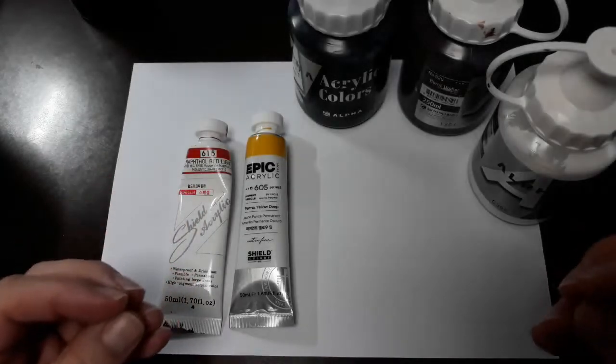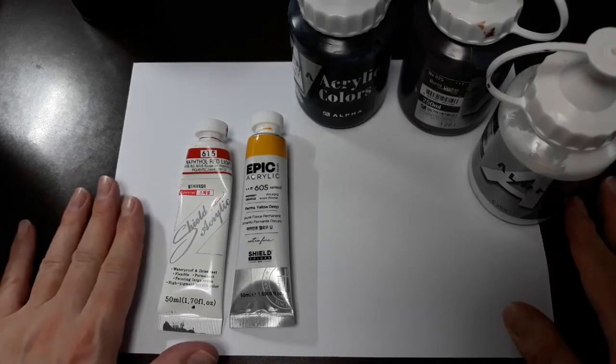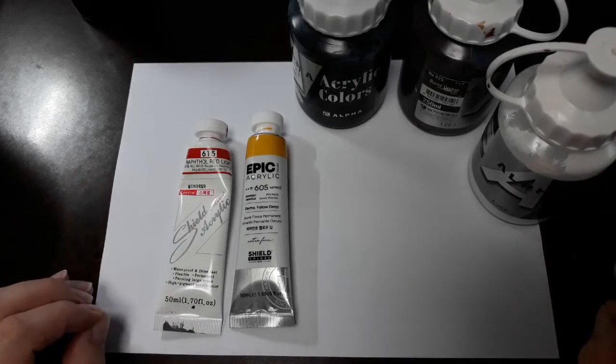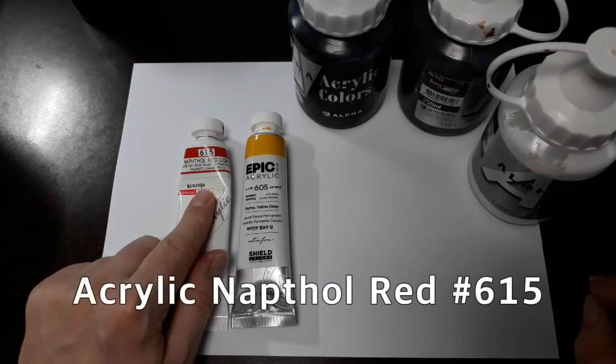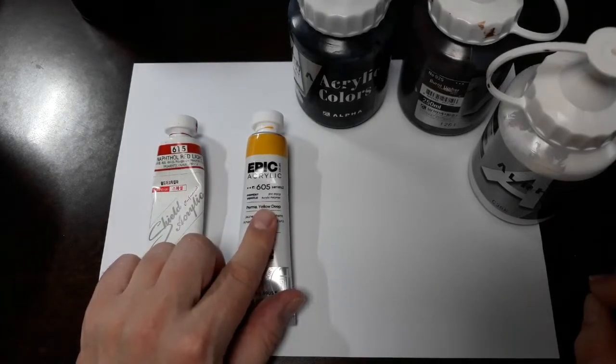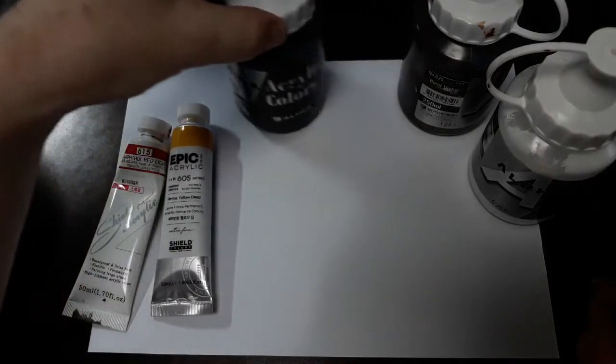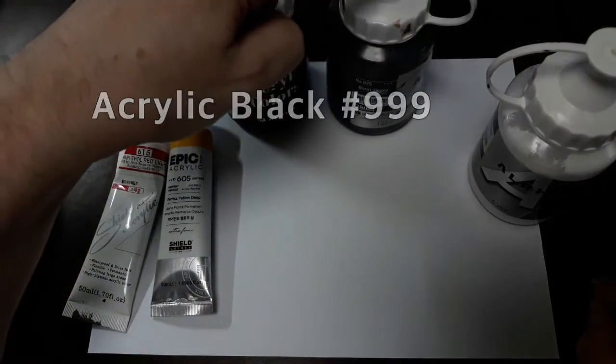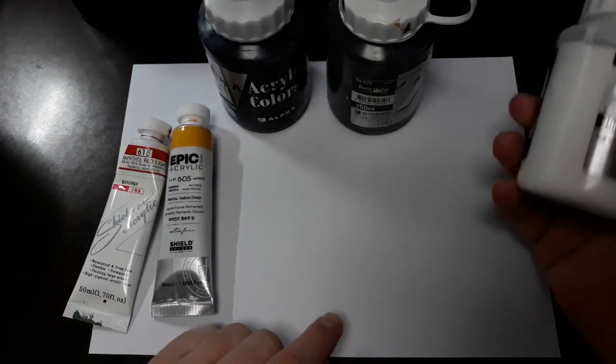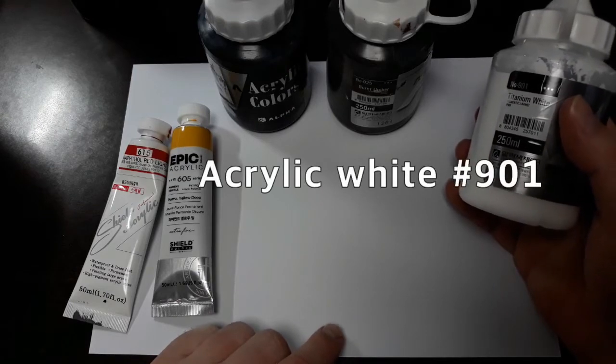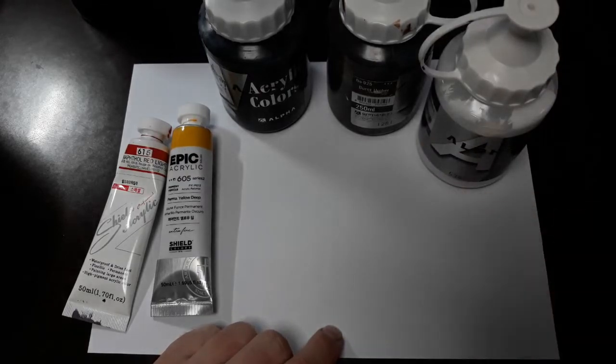How do you mix terracotta paint? Today I'll be showing you with this tutorial how to mix up anything into terracotta color. We're going to be starting off with Napthol Red Light number 615. I'm using an Epic Brand Acrylic 605 Permanent Yellow Deep. I'm also using a 999 Black Acrylic. My favorite of all colors in the acrylic family is a Burnt Umber number 925. And we're using a little dot of white today. I'm using a 901 acrylic. So let's put out our palette here and start our mixing.